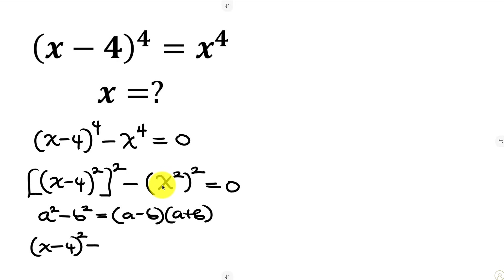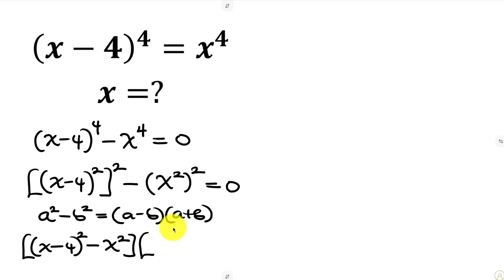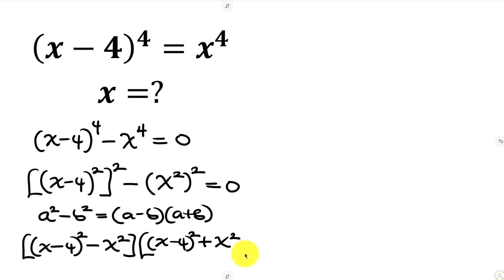Writing it in this form, we have (a minus b): inside the big bracket we have our 'a' which is x minus 4, all raised to power 2, minus our 'b' which is x squared. This times (a plus b): x minus 4 all squared plus x squared, and this is equal to 0.